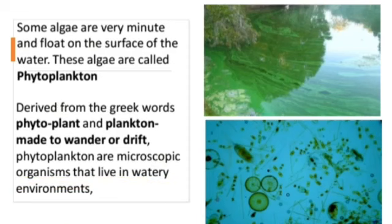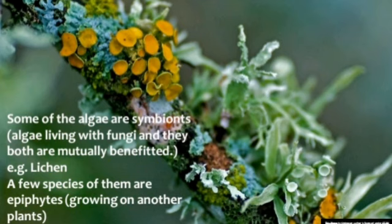Some algae are very minute and float on the surface of the water. These algae are called phytoplankton, derived from two Greek words meaning 'plant' and 'to wander or drift.' Phytoplankton are microscopic organisms that live in watery environments and cannot be seen with the naked eye - only with the help of a microscope.